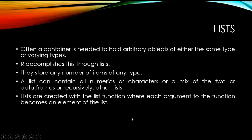So basically, what are lists? Often we need a container to hold arbitrary objects of either the same type or varying types. When working on particular objects, we may have vectors, data frames, lists, matrices, and various other things. R accomplishes this through lists. They store any number of items of any type — be it numeric, character, data frames, whatever. A list can contain all numeric or characters, a mix of the two, data frames, or even other lists. Lists can be created with the list function, where each argument to the function becomes an element of the list.